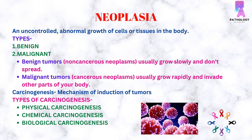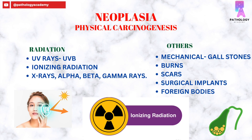Carcinogenesis is the mechanism of induction of tumors. There are three types of carcinogenesis: physical, chemical, and biological. Physical carcinogenesis can be caused by irradiation such as UV rays, ionizing radiation, X-rays, alpha-rays, beta-rays, and gamma-rays.